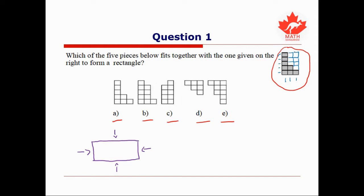But does this shape match up with any of the five we have below? There are two different rows of blocks, and the only one of those shapes that has two different rows of blocks is C. But are these the same? If we count up, one of our rows has three blocks, but none of the rows in C have three blocks. So this can't be right.